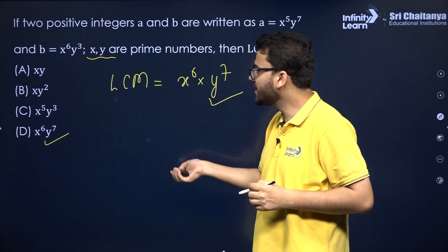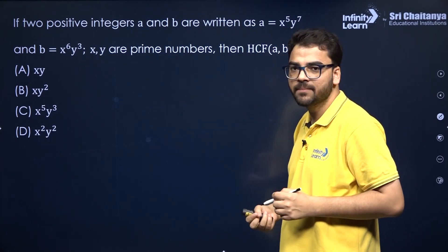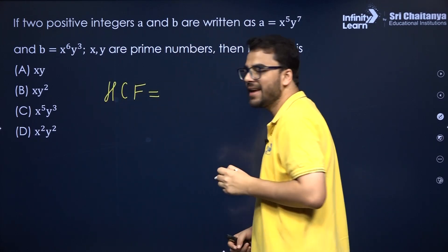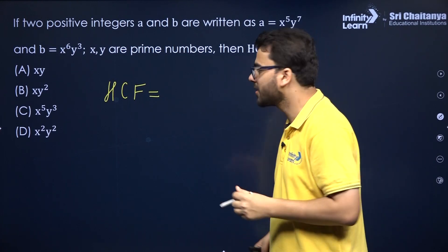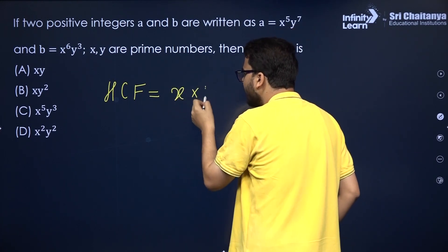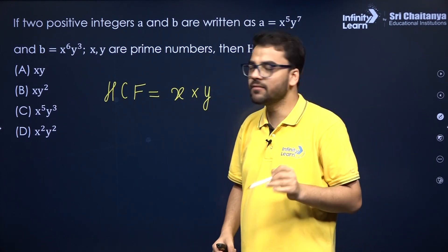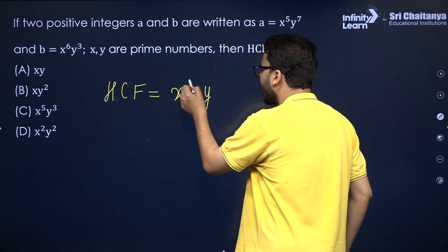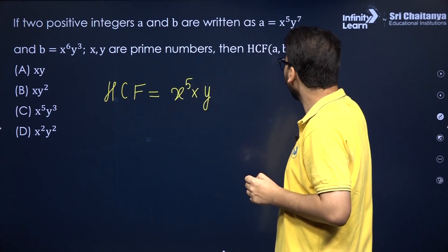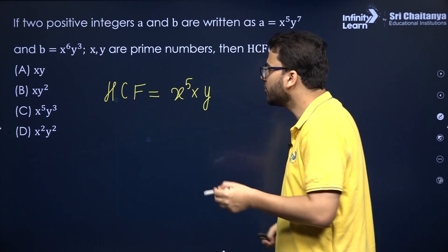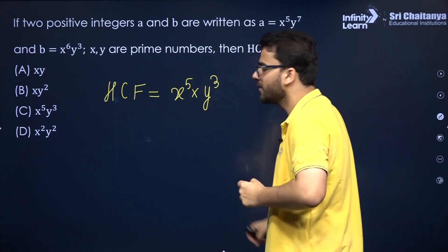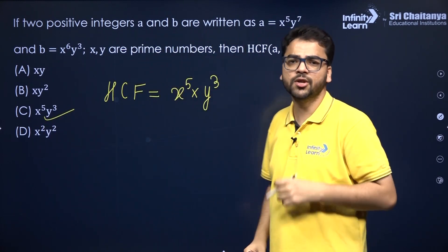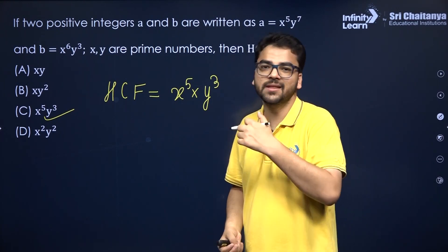Suppose in the same question, HCF is asked. HCF means you take the highest common factor — the common factors here are X and Y. Now take the least power of each: from x⁵ and x⁶ take x⁵, and from y⁷ and y³ take y³. Therefore, the HCF is x⁵y³. This type of question has appeared in previous year questions and sample papers.